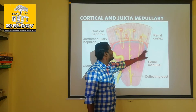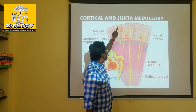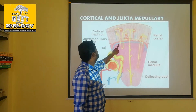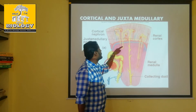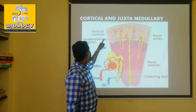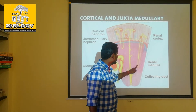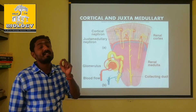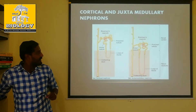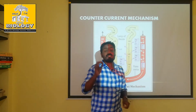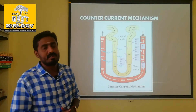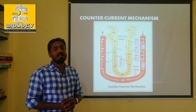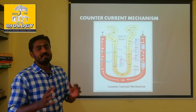In the medullary region and cortex region of the kidney, we can talk about the ultrastructure. Cortical nephrons are in the cortex region; juxtamedullary nephrons extend into the medullary region. The Vasa recta is associated with juxtamedullary nephrons, and this is the counter-current mechanism.